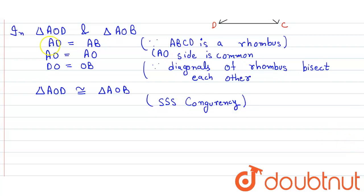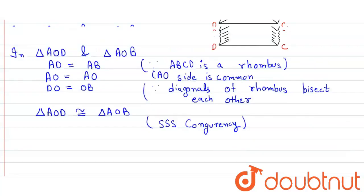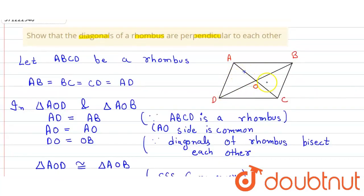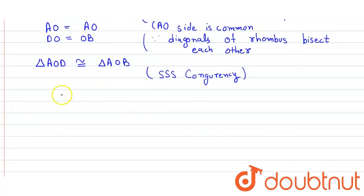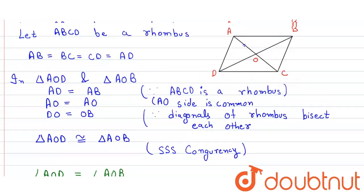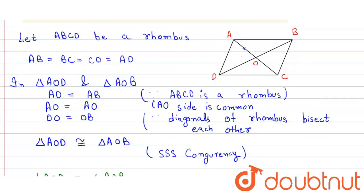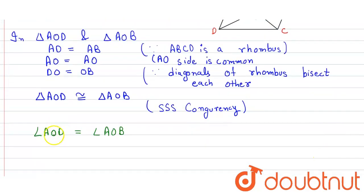Now, these two angles AOD and AOB are equal. So, angle AOD = angle AOB, and they are both a pair of linear angles.